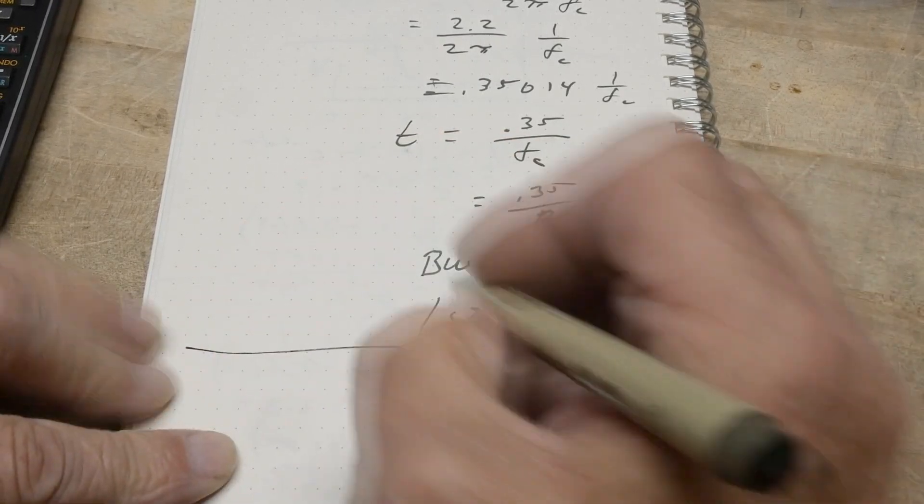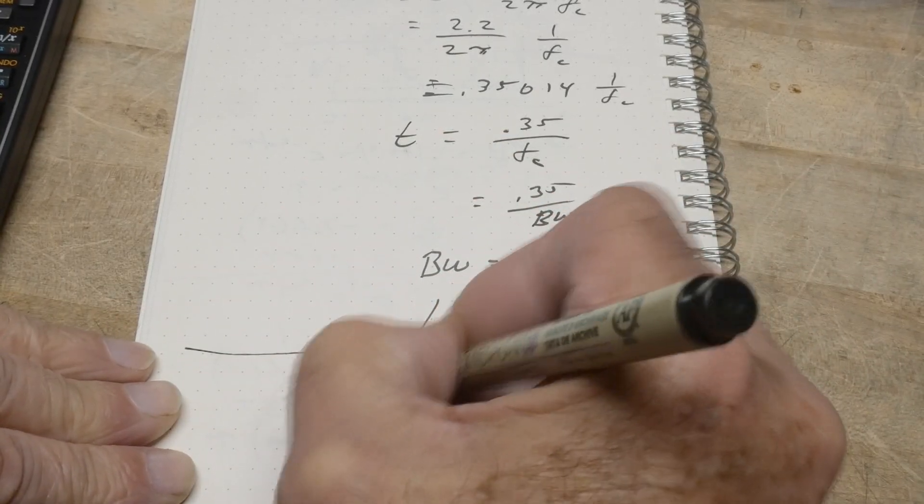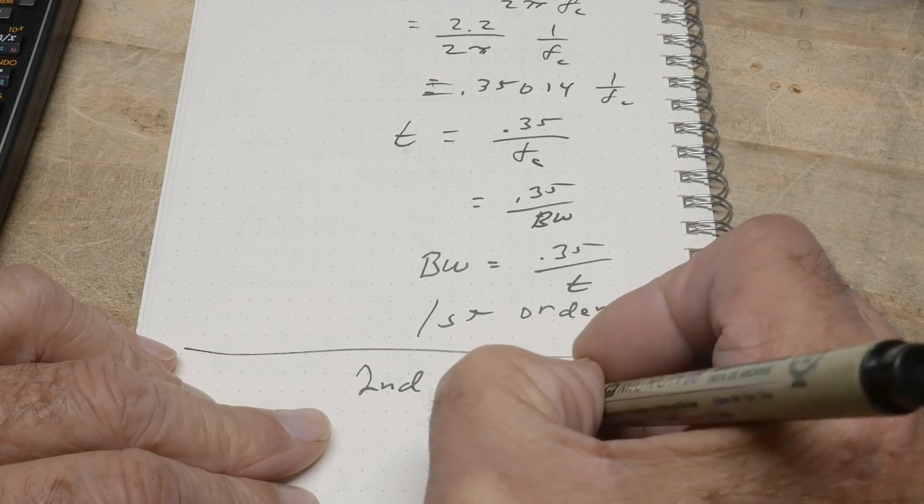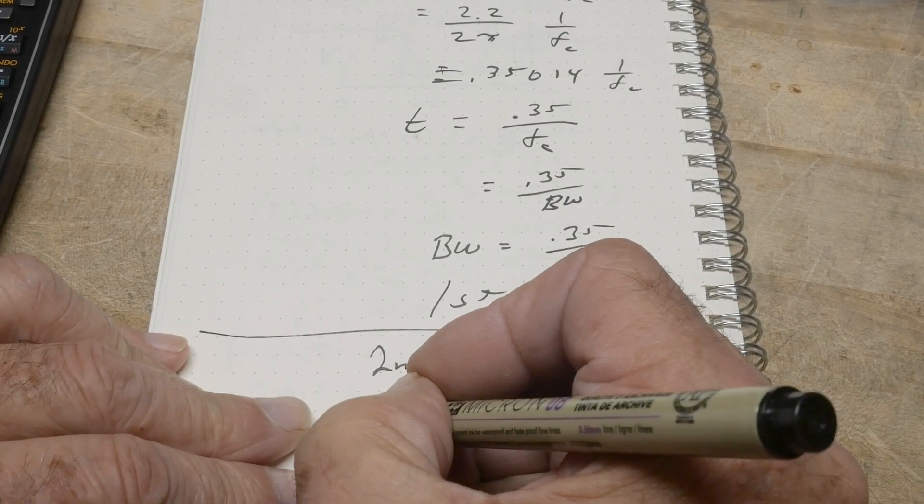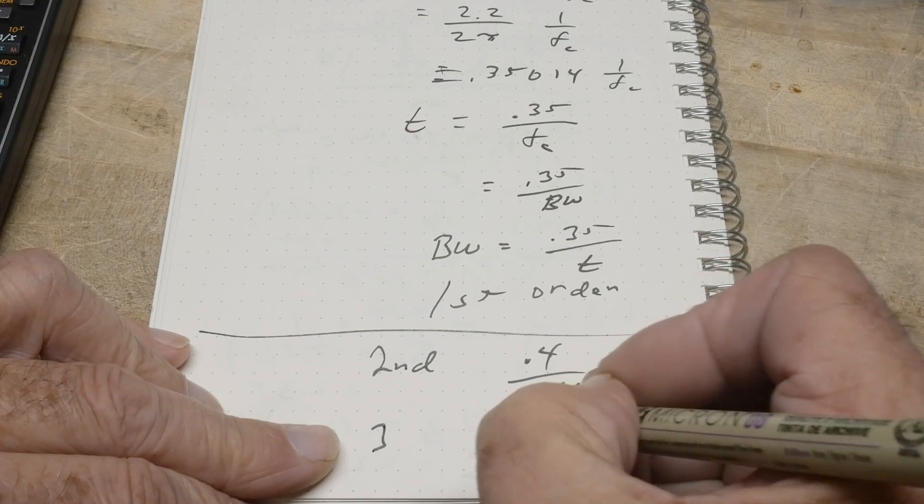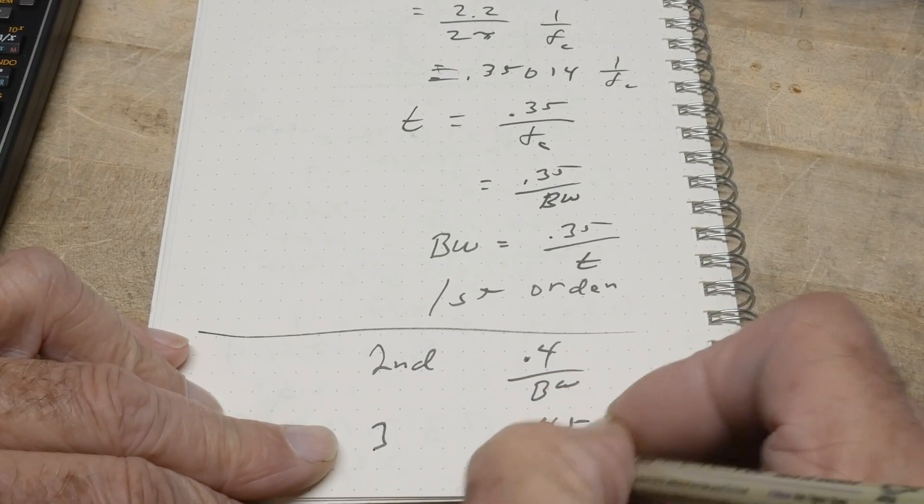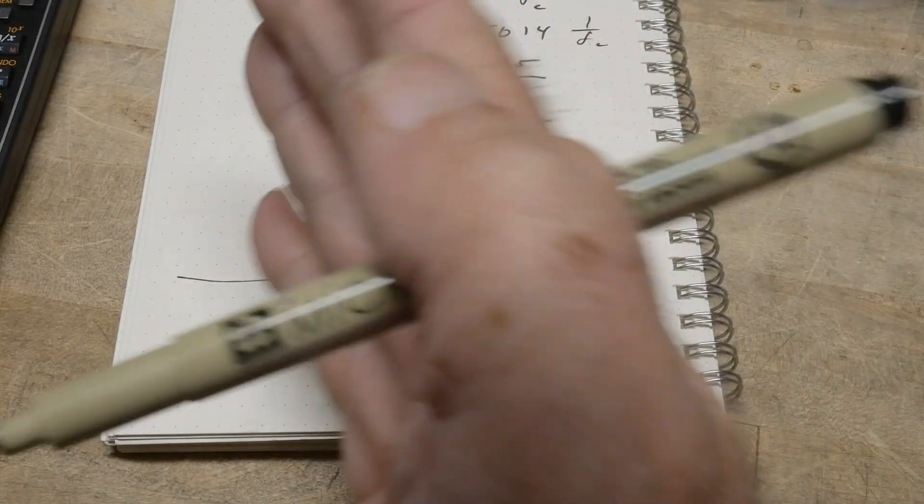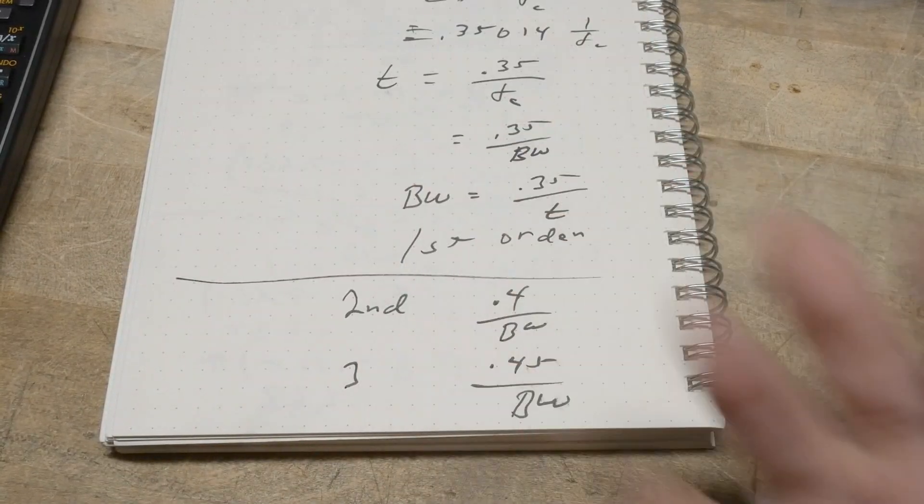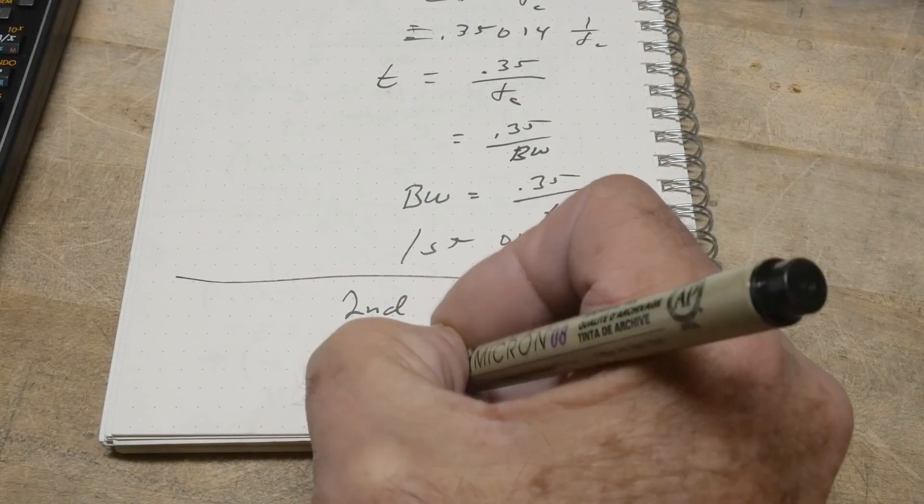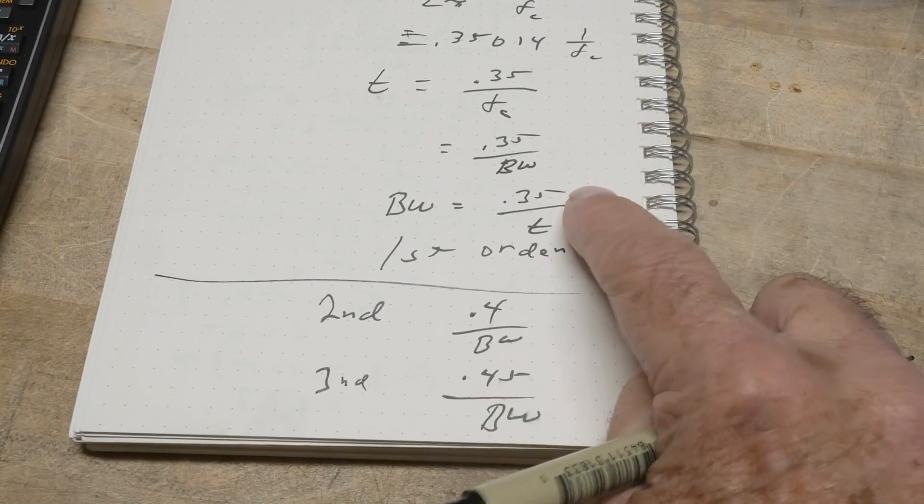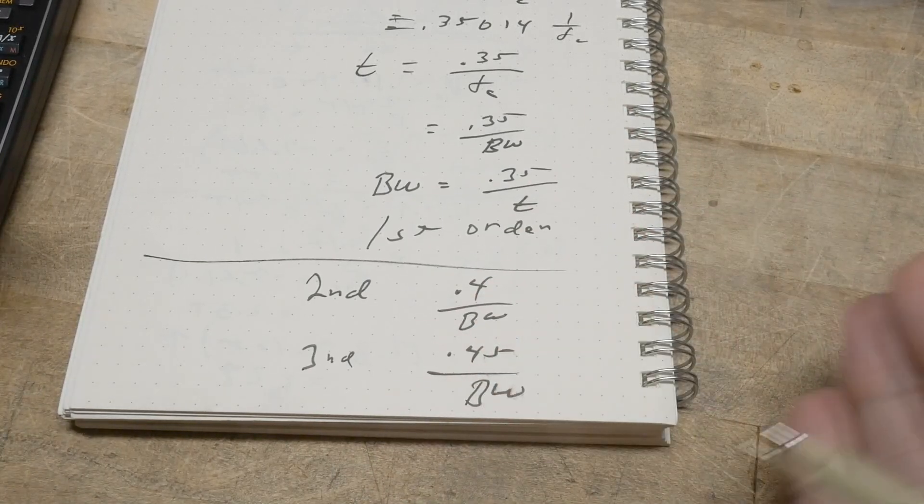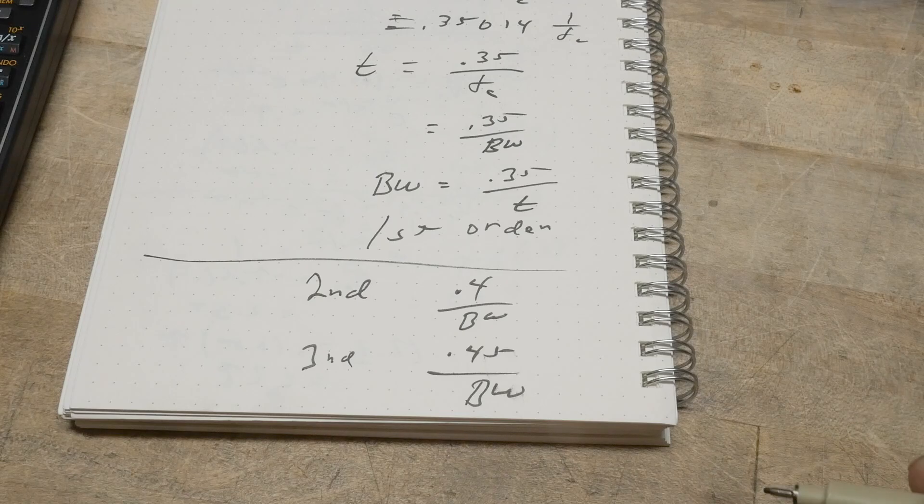A second order filter will be 0.4 divided by bandwidth. And a third order will be 0.45 divided by bandwidth. These require more fancy mathematics. You need to do a Fourier transform to go from time domain into frequency domain and everything. But if you take my word for it, in the old days, we used 0.35. But modern oscilloscopes, we're going to be using either a 0.4 or 0.45. And that will give us a ballpark number of our bandwidth.